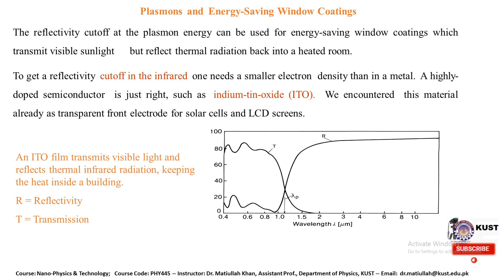It keeps the heat inside a building. The reflectivity and transmission curves are shown as opposites of each other — in the visible regime it transmits visible light and reflects thermal radiation, which is why it is used for these particular applications.